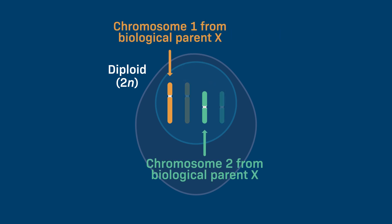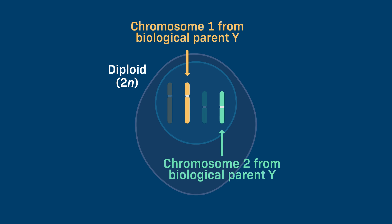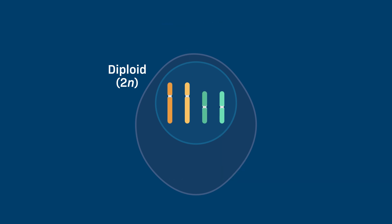One copy is inherited from each biological parent. We call these two copies a pair of homologous chromosomes, or homologues.